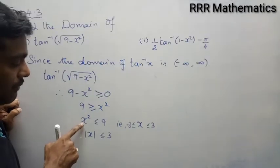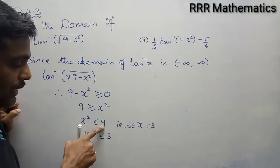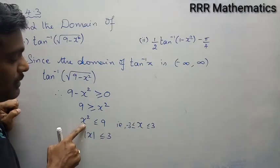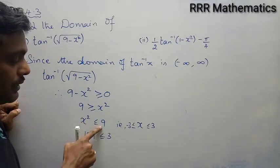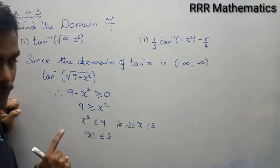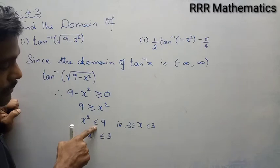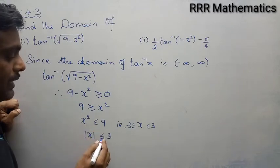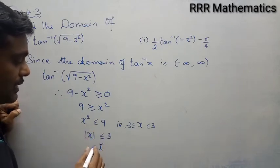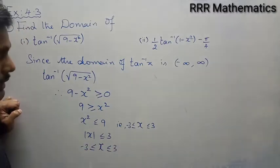For example, if you take x equal to 1, 2, or 3, the maximum gives 3 squared equal to 9. If you take x equal to 4, it gives 16, which is more than 9. Up to minus 3, the square gives plus 9, which is less than or equal to 9. So mod x less than or equal to 3 means x lies between minus 3 and plus 3.